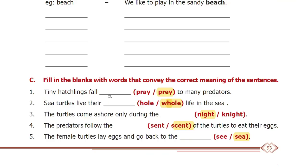Fill in the blanks with the words that convey the correct meaning. Number 1: tiny hatchlings fall prey to many predators — the answer is prey. Number 2: sea turtles live their whole life in the sea — the answer is whole.